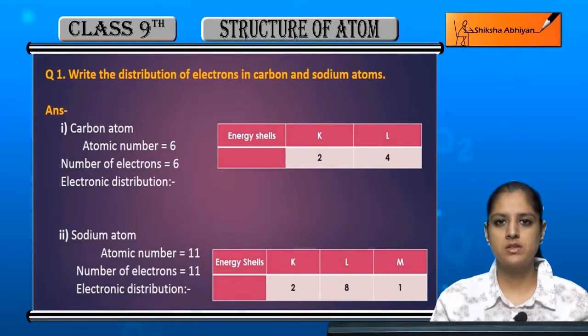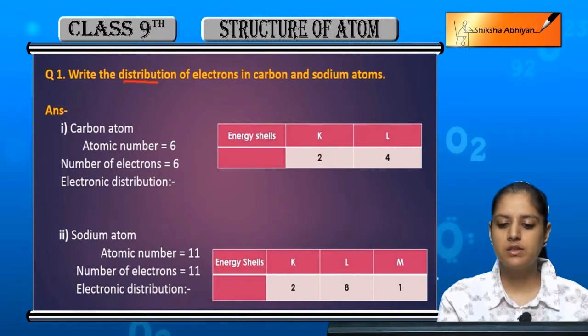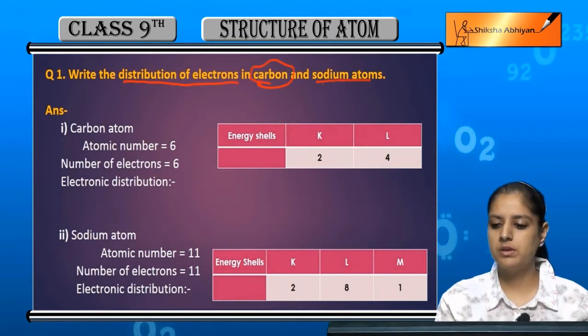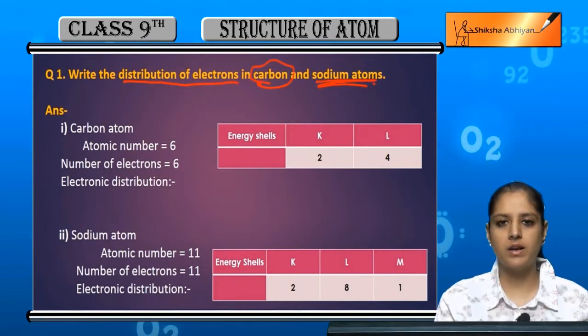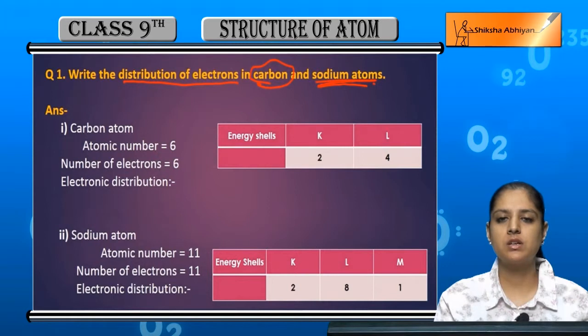So now we are going to discuss some questions. The first question is: Write the distribution of electrons in carbon and sodium atoms. In them we have to write electronic distribution.